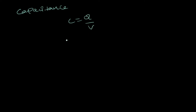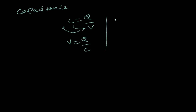Since V varies, I am writing this equation as V equals Q by C. As V varies from capacitor to capacitor: for the first capacitor we have V1, for the second capacitor we have V2, and for the third capacitor we have V3.